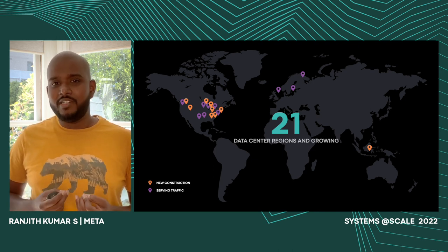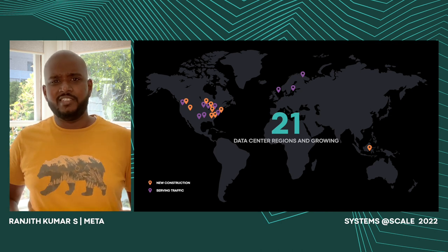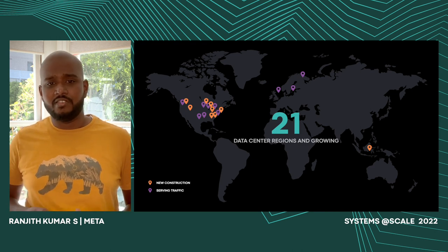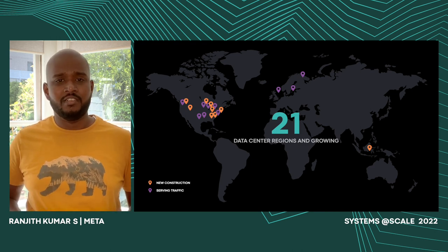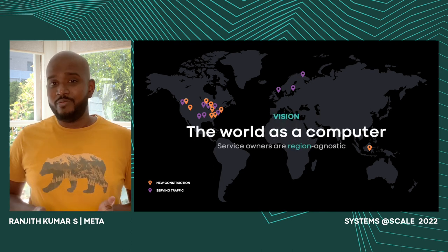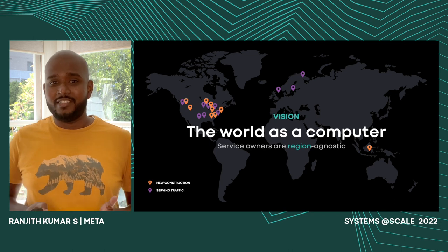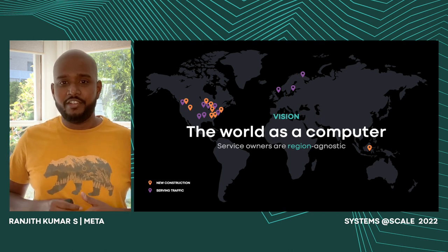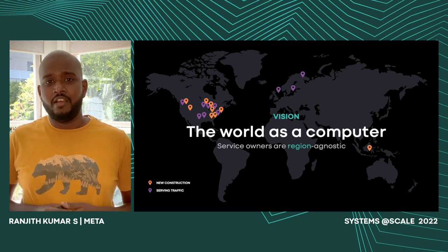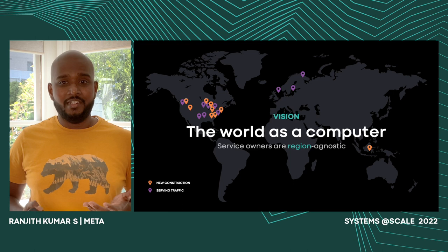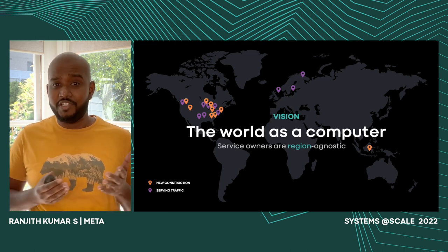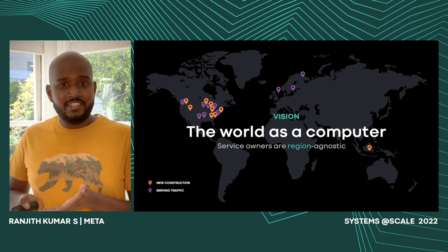How can we enable our services to think more regional agnostic? What are some of the abstractions, tools, and automations we need to do that? The solution is to think of the world as a computer. Many of you would have read about the data center as a computer. Similarly, what if we are able to think and perceive the world as a computer? We would then be able to think, operate, and optimize globally, allowing services to move from a machine-agnostic world to a regional-agnostic world.